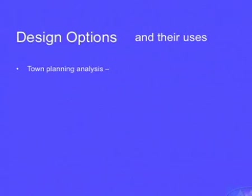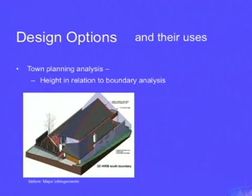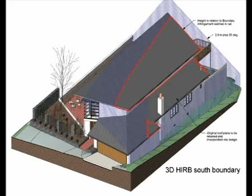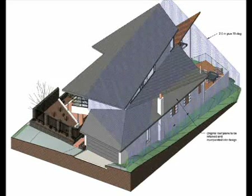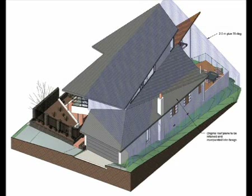We also use design options in town planning analysis. Design options allow us to turn them on and off in different views. For instance, with town planning analysis we can show height in relation to boundary analysis. Here we actually have a physical plane following the contour of the side boundary and showing in three dimensions how it's cutting through the roof plane — very useful. We can just turn it off in the view if need be, but it really allows an accurate representation.